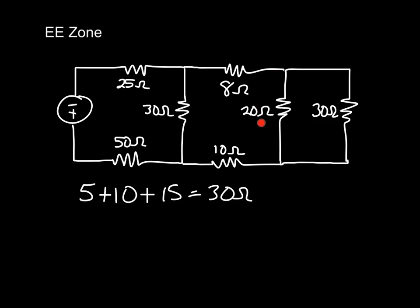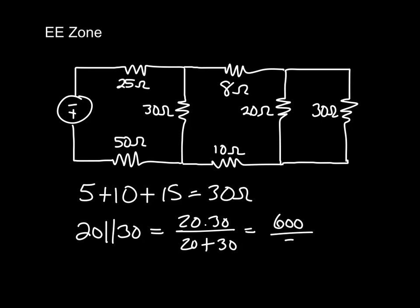Now what you should see is that we have 20 and 30 in parallel, so we can go ahead and combine those. 20 in parallel with 30, we can write that as 20 times 30 over 20 plus 30, which is equal to 600 over 50, which should be equal to 12. So we can replace the 20 and 30 ohm resistors in parallel with 12 ohms.